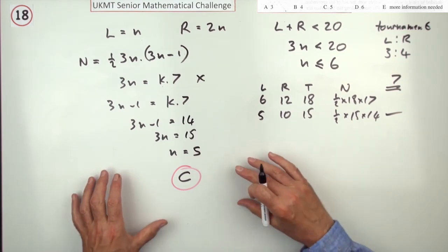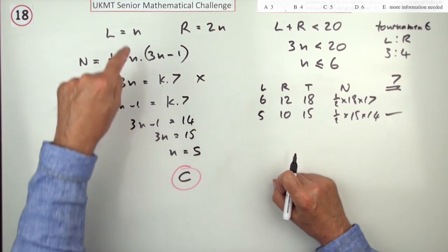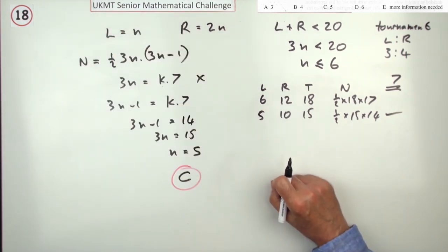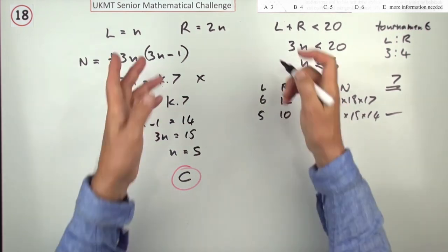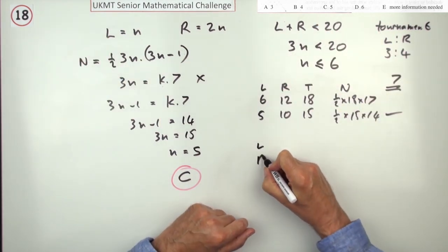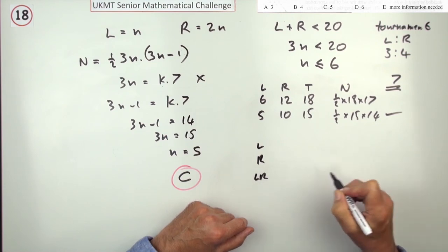Now if the question did ask something a bit more complicated, like what's the ratio of wins between the two groups of players, then having this answer lets you enumerate that. You've got left-handed matches, right-handed matches, and left-right matches.